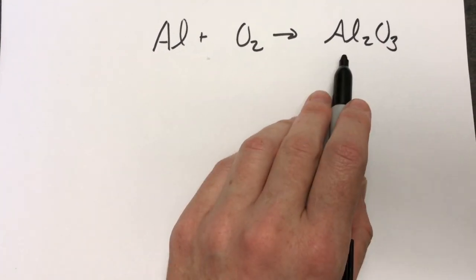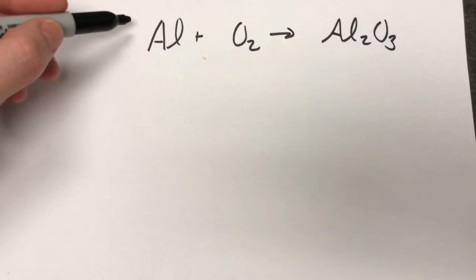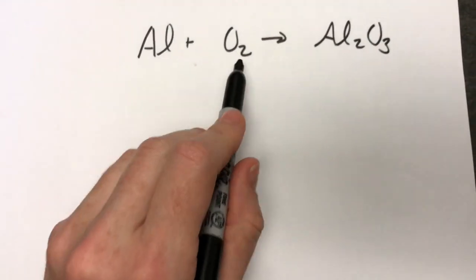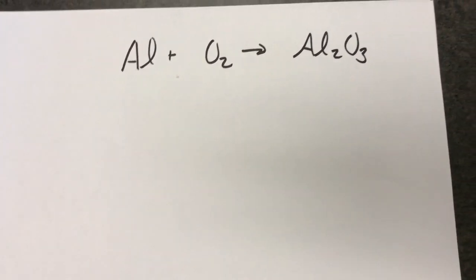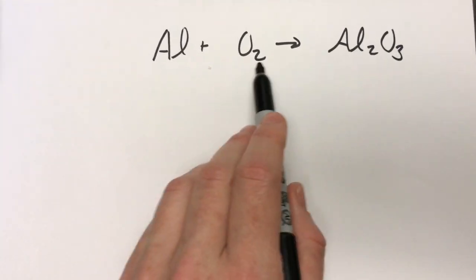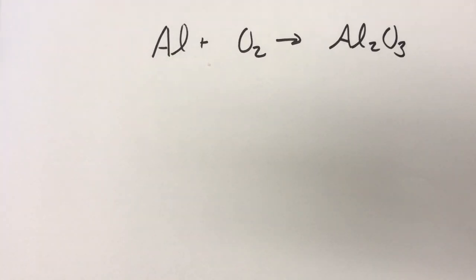So the next question should be which one's the more difficult point of difference? Well aluminum, I have one here and two there. So it'd be really easy if I just put a two here. But O2, we have two here and three there. You should recognize that that's slightly more difficult and that's why we want to start with the oxygen.